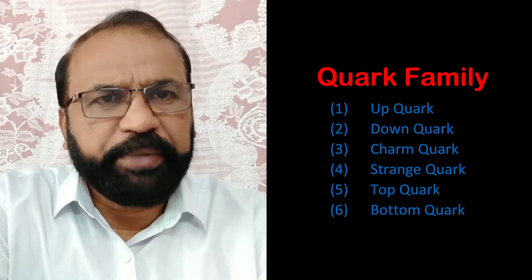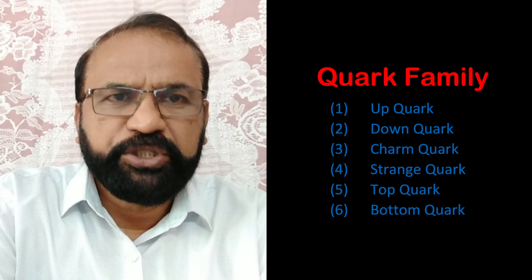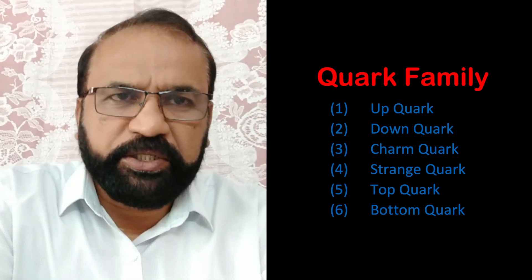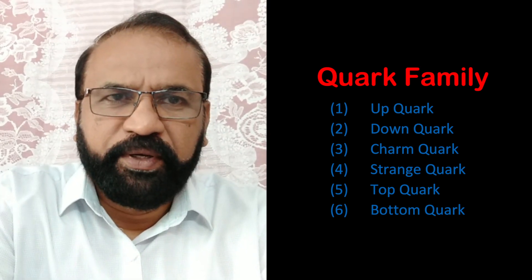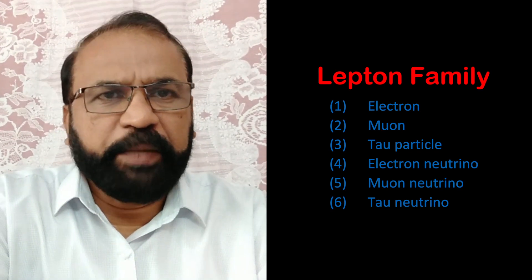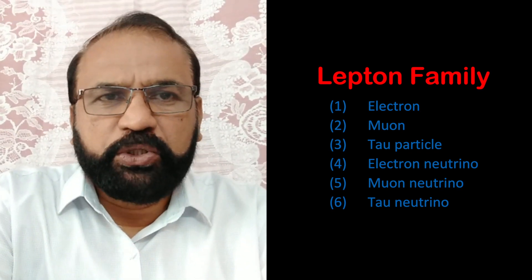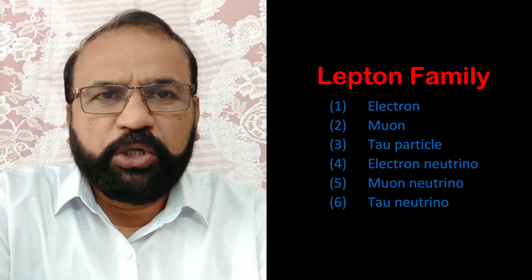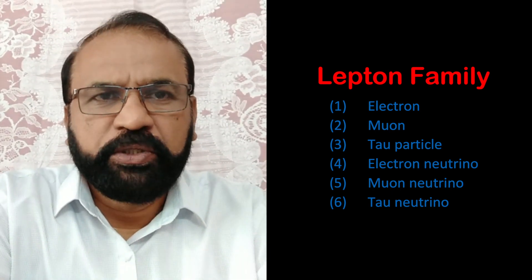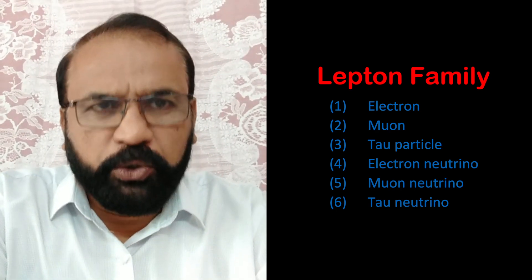There are six members in the family of quarks: up, down, charm, strange, top, and bottom quarks. There are six members in the lepton family also: electrons, muons, tau particles, electron neutrinos, muon neutrinos, and tau neutrinos.